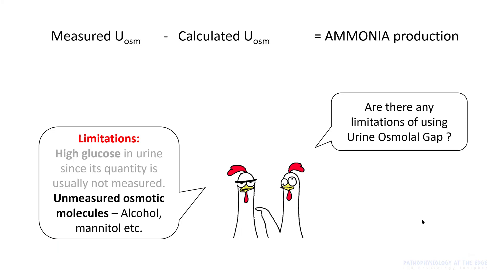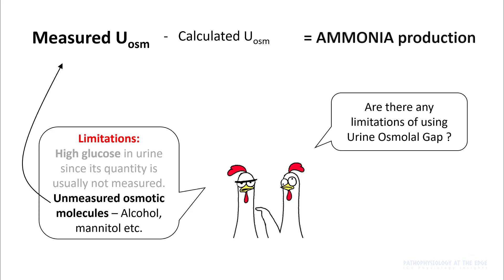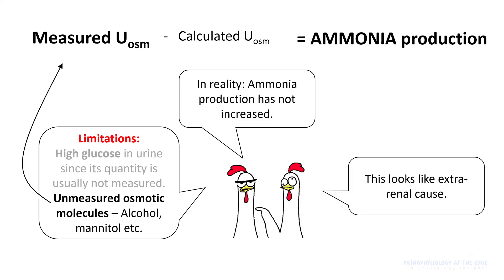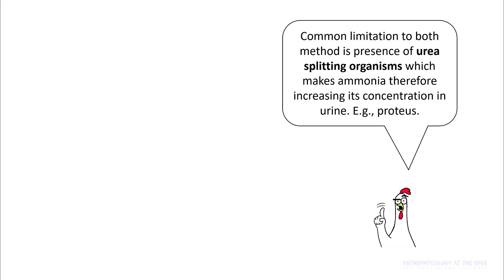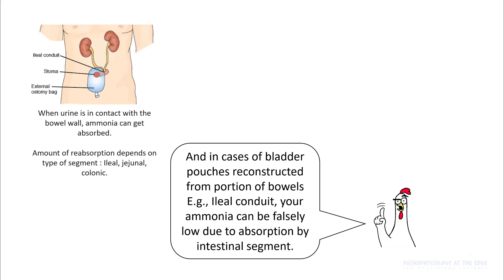One main limitation of the urine osmolal gap is the presence of unmeasured osmotic molecules like alcohol and mannitol. Also, glucose is not usually quantitatively measured in urine, so it can go unnoticed. In these cases, measured urine osmolality will be falsely elevated, making it appear that ammonia production has increased and leading to the wrong conclusion of an extra-renal cause. A common limitation for both methods is the presence of urea-splitting organisms, which produce ammonia and can falsely increase its concentration — for example in UTI with Proteus. Additionally, in patients with bladder pouch reconstruction using GI tract segments such as ileal conduit or jejunal conduit, those segments can absorb ammonia, making ammonia appear falsely low.